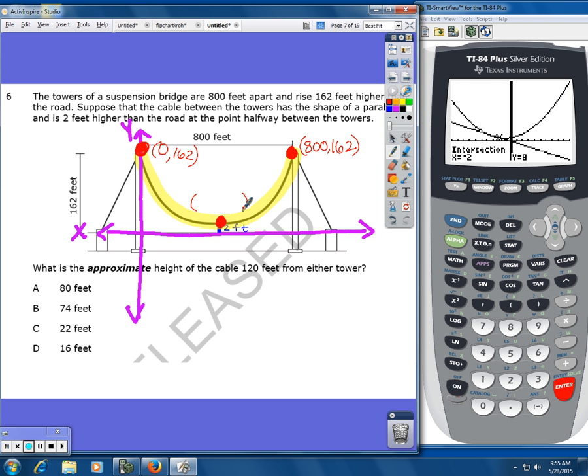My middle one right here, I know that it's halfway in between this tower and this tower. So 800 divided by 2 is 400. And then I know that it's 2 feet off of the road, like that. So these are my three ordered pairs.